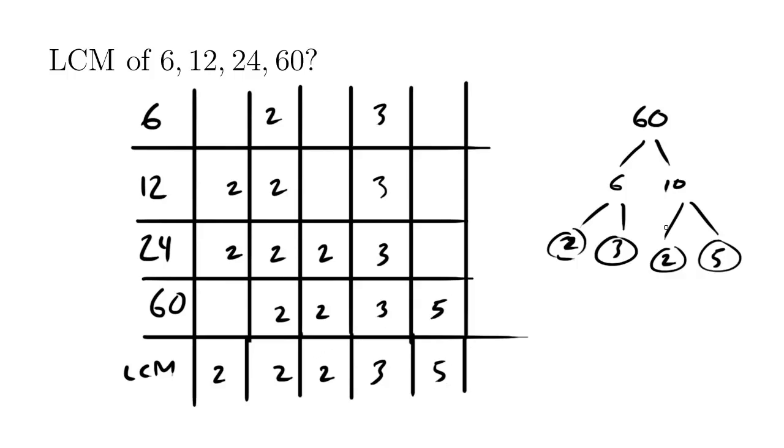So what is the LCM? The LCM here is going to be 2 times 2 times 2 times 3 times 5, which equals 120, which is what we originally found.